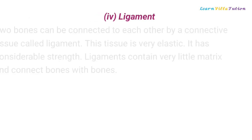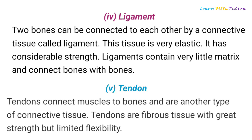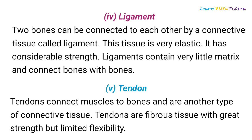Ligament: two bones can be connected to each other by a connective tissue called ligament. This tissue is very elastic and has considerable strength. Ligaments contain very little matrix and connect bones with bones. Tendons connect muscles to bones and are another type of connective tissue. Tendons are fibrous tissue with great strength but limited flexibility.